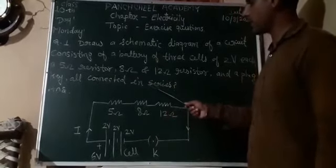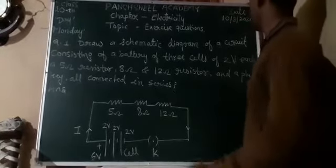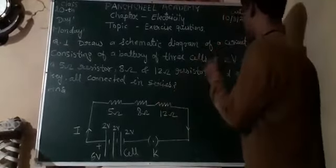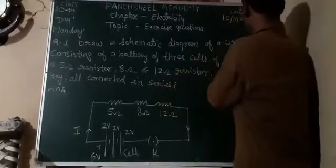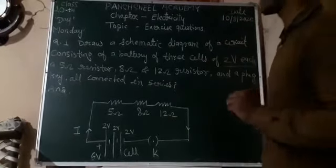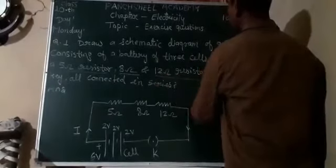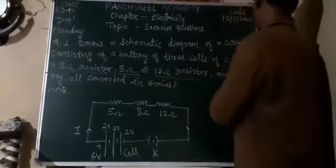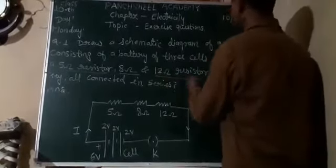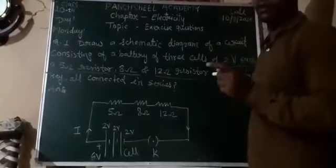So we are going to create a diagram which is all connected in series. The information we have: first, a 2 volt battery; second, a 5 ohm resistor; an 8 ohm resistor; a 12 ohm resistor; and a plug key — all connected in series.